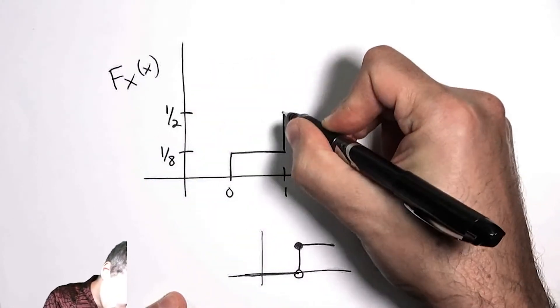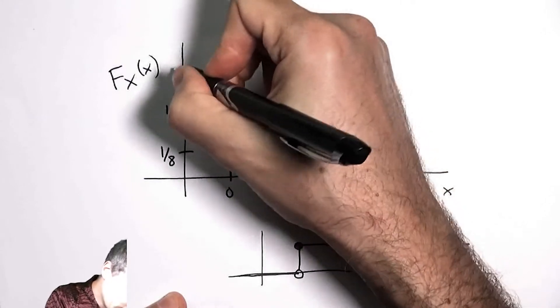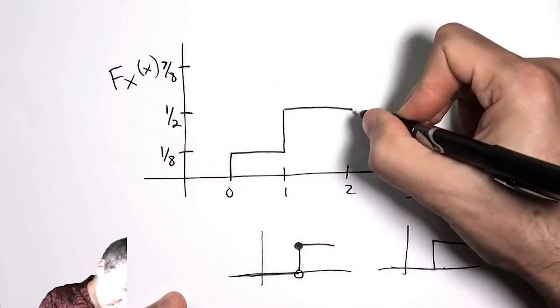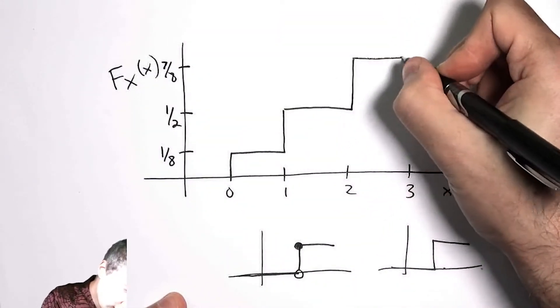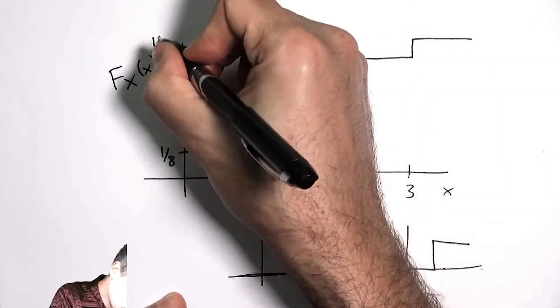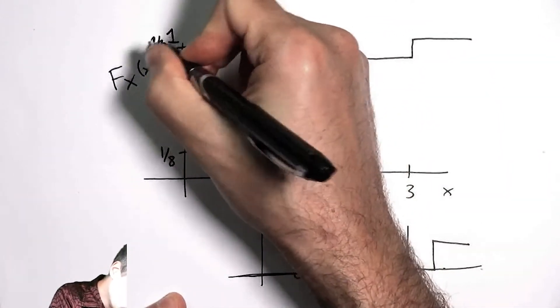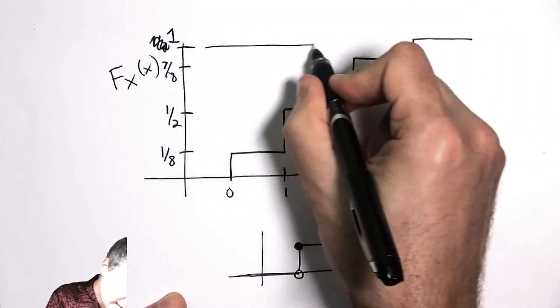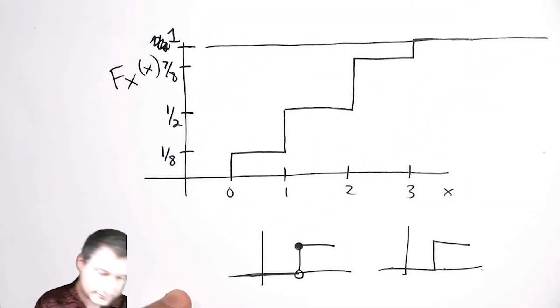And then I accumulate another three-eighths over here when I hit two, and then finally I accumulate the final one-eighth when I hit three.